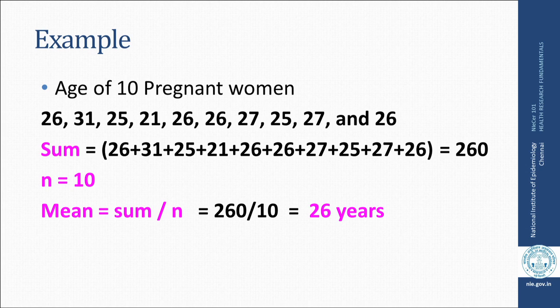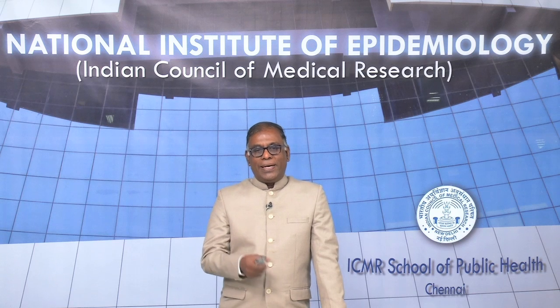For example, suppose there are 10 pregnant patients who visited an ANC clinic and their ages are 26, 31, 25, and so on. To find the mean age, we sum all the ages, which comes to 260, and divide by 10 observations: 260 divided by 10 equals 26. We say the mean age of pregnant women who visited the ANC clinic is 26 years.